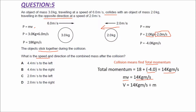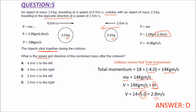V equals total momentum divided by mass. Since the objects stick together, we use the total mass of 3.0 plus 2.0, that is 5.0 kilogram. We get the velocity 2.8 meter per second. It will move towards the right because the momentum on that side is greater.